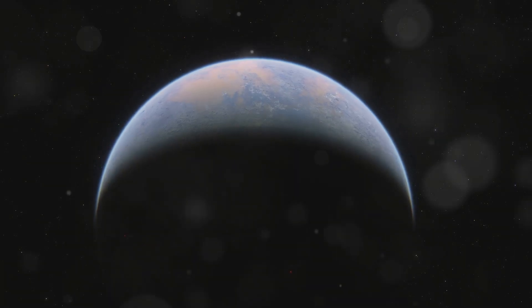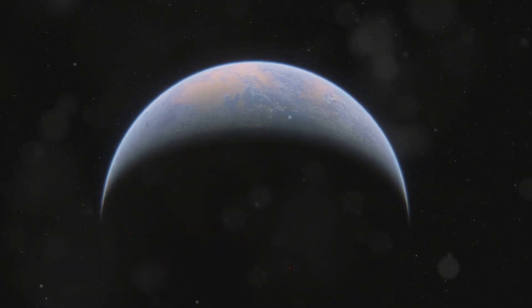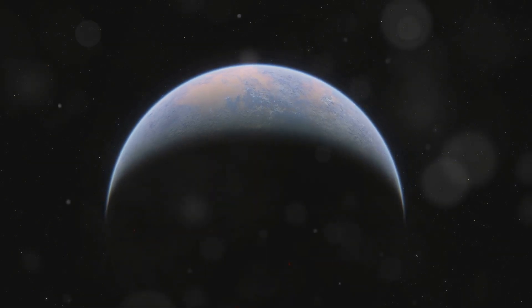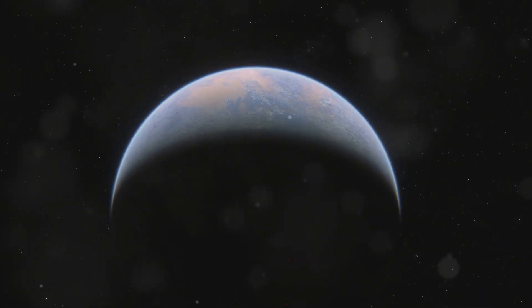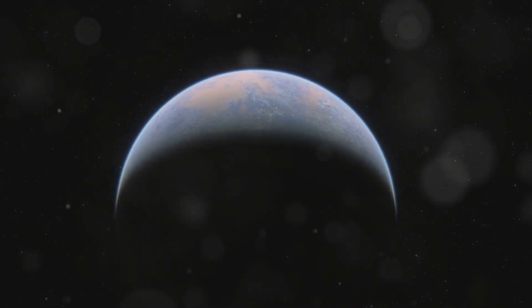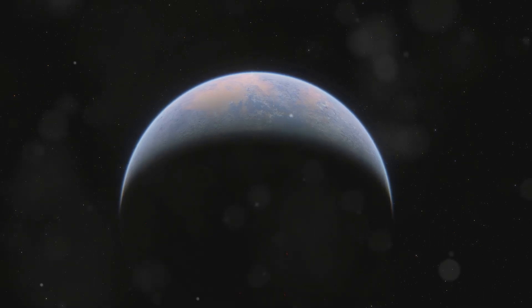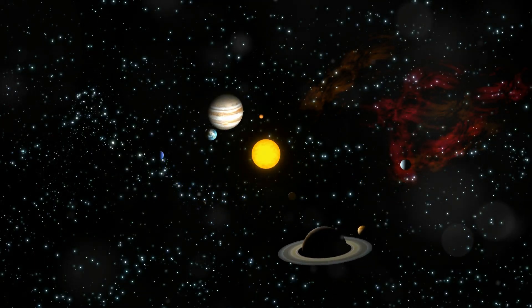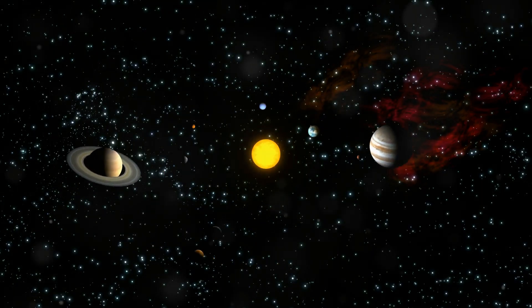Finding a planet orbiting three stars is incredibly rare. Such systems are not only fascinating but also provide crucial data points for our models of planetary formation. The gravitational dynamics in these systems are complex, making the existence of stable orbits a remarkable feat.